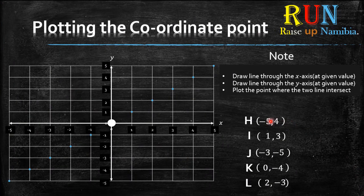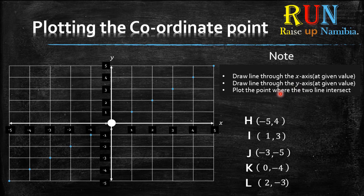So now, how do we plot coordinate points on the grid? We use this note here. What we do is draw a line through the x-axis, then draw another line through the y-axis, and then plot our point where the two lines intersect. If you don't understand, don't worry — we'll be getting into examples. Let's start with H.